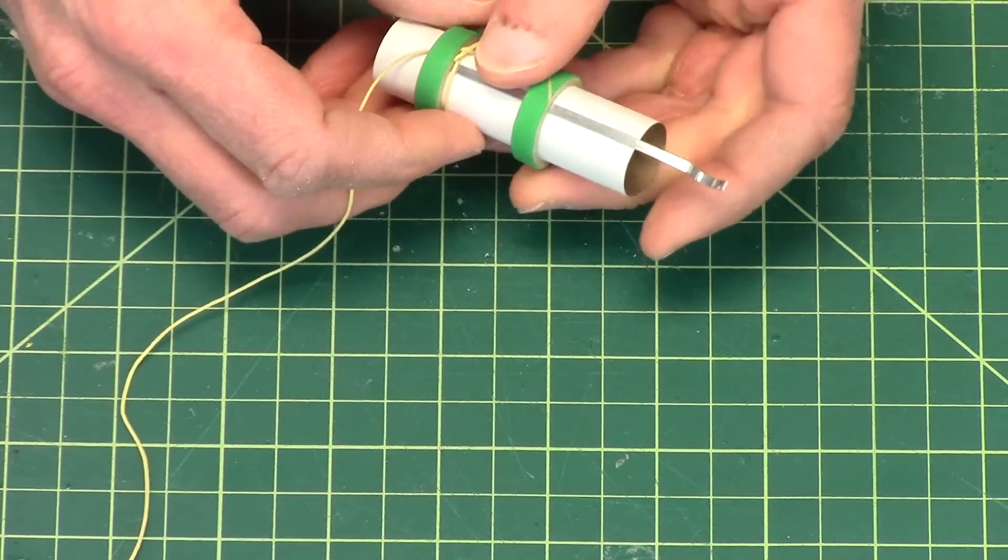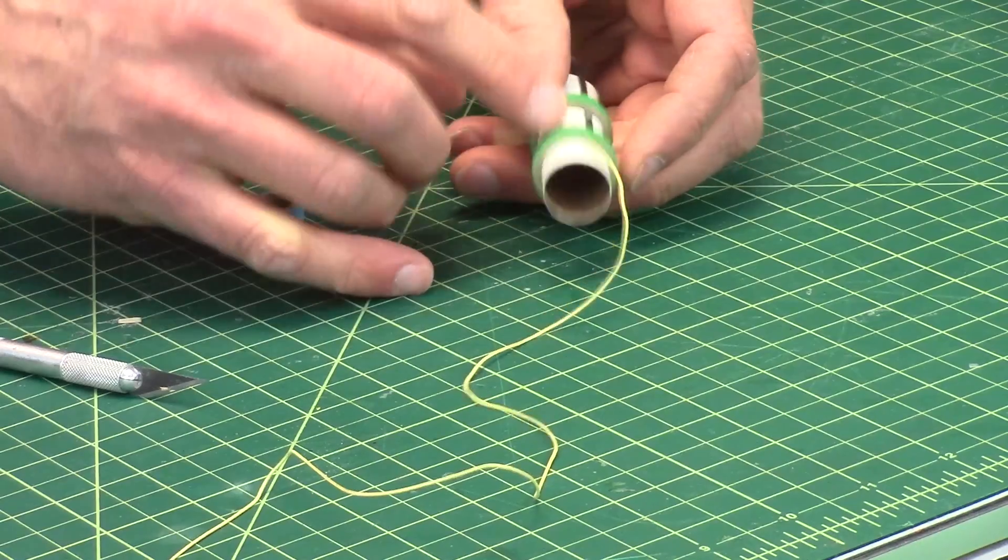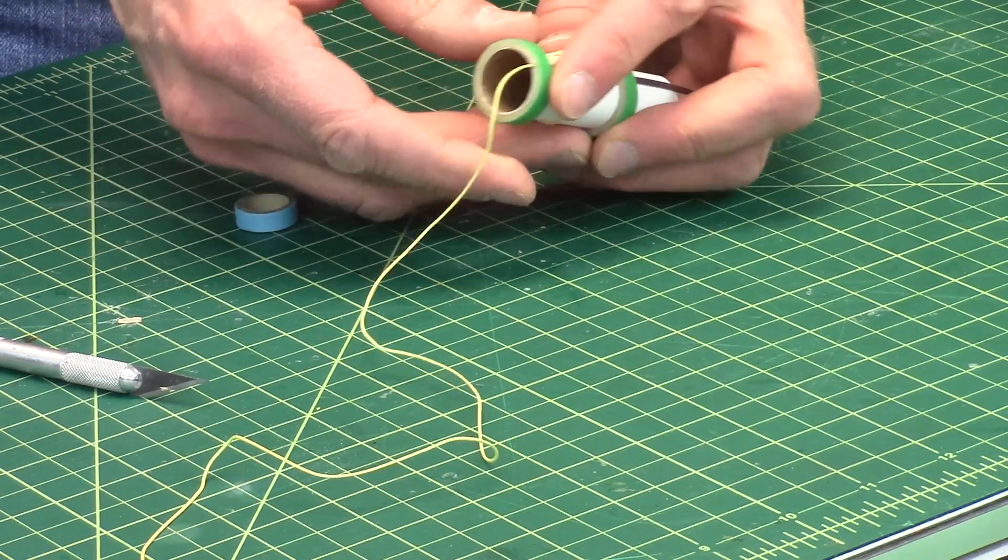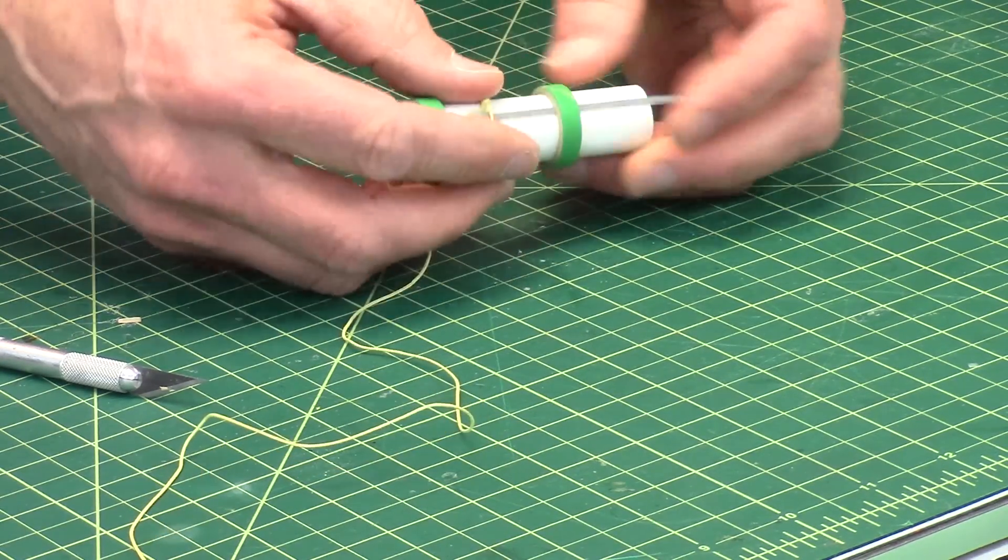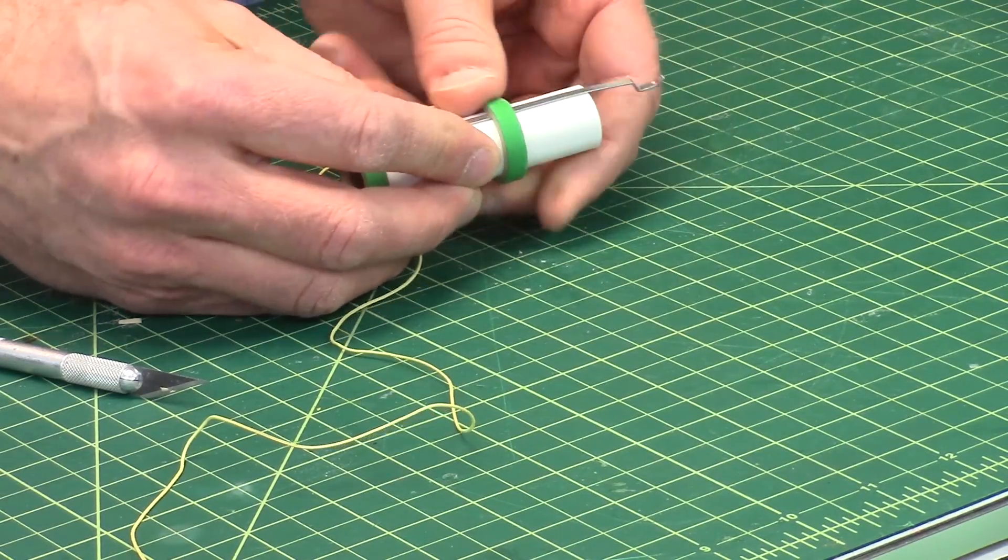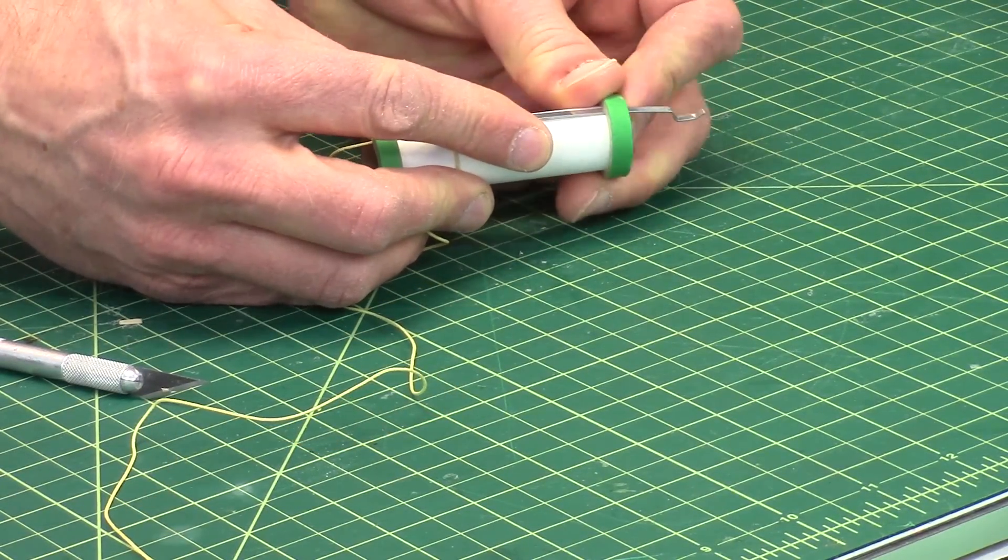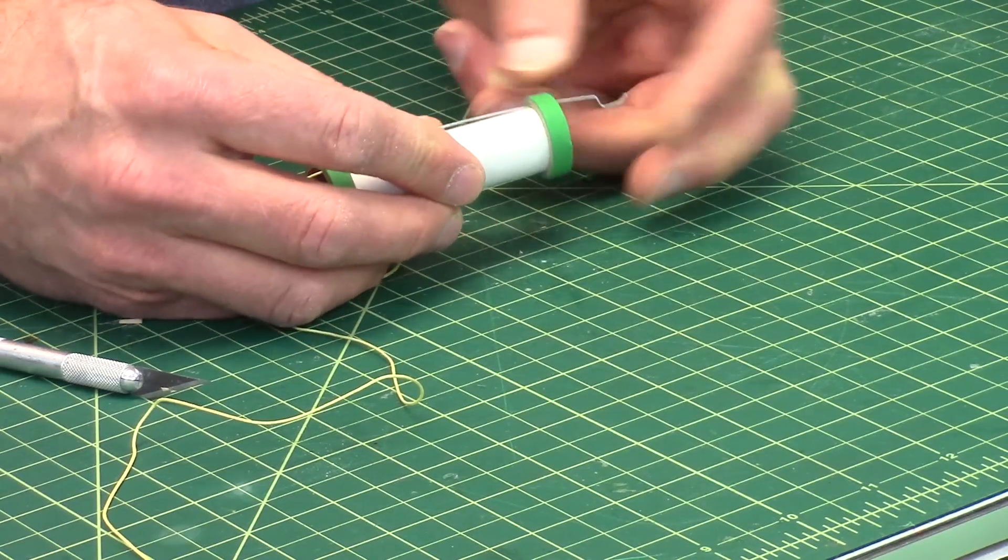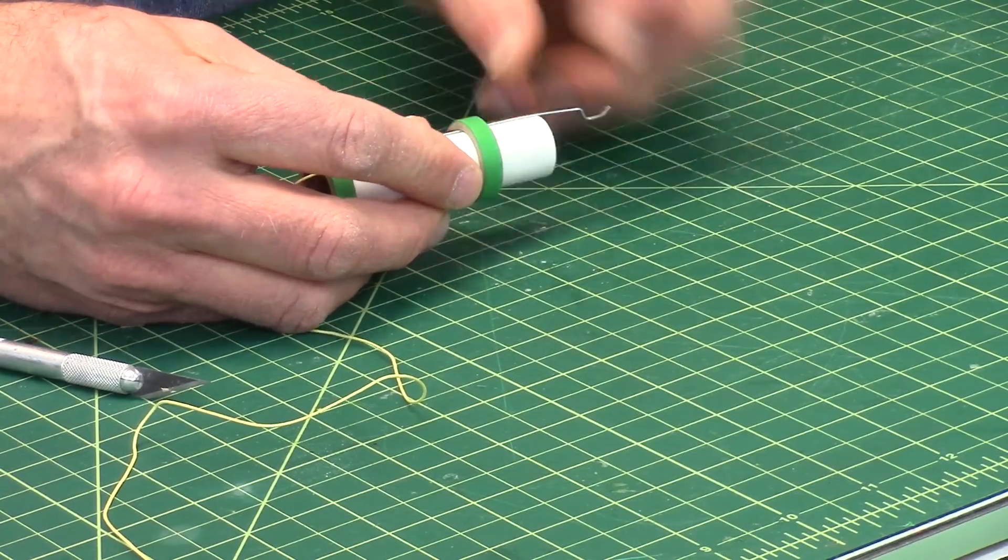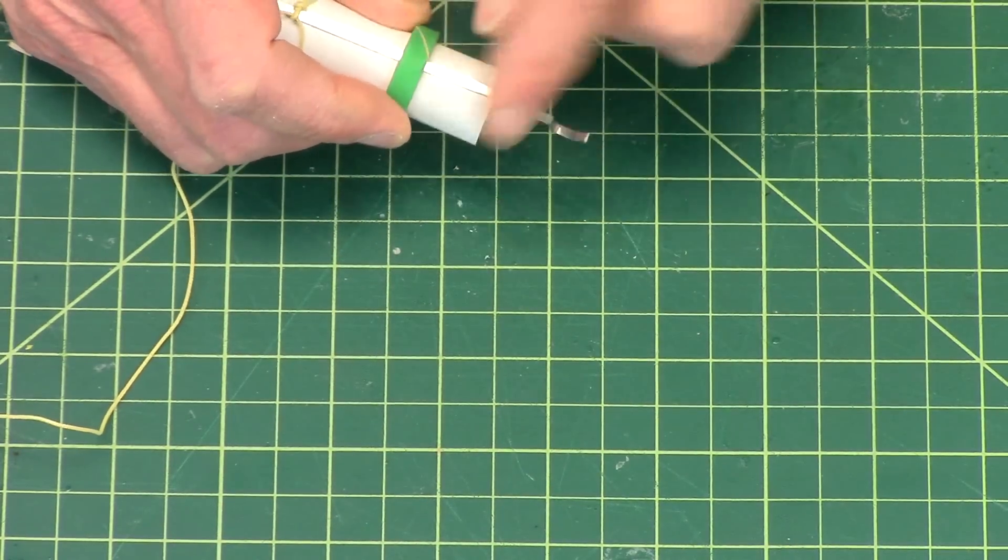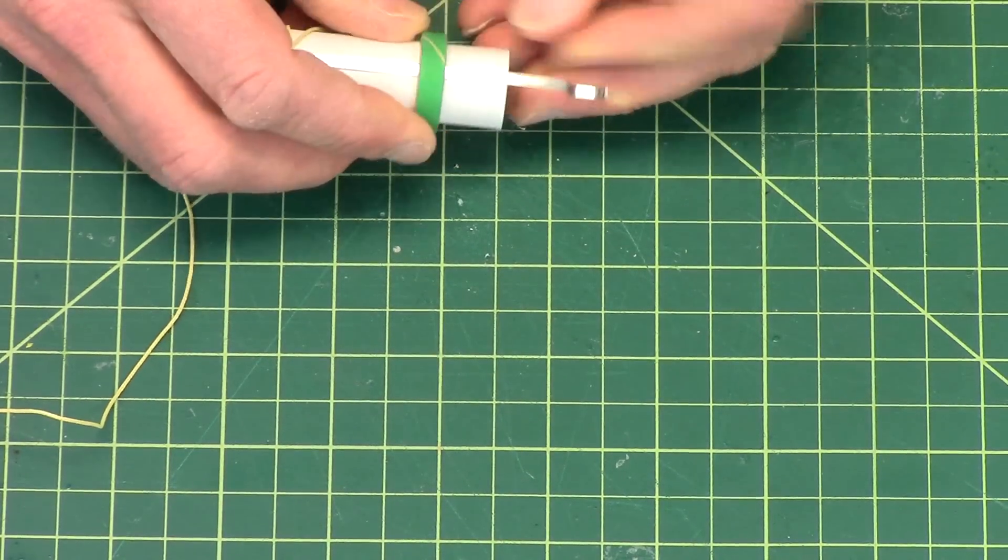And at this point I can start gluing things up. The forward ring, this is going to be the front end of the rocket, I like to put right at the front end of the tube. And then the back ring, I want to make sure I don't put it too far back onto the tube, or I can't bend up the engine hook like that. So I like to put it at least a half of an inch back from the edge of the tube. So somewhere around there.